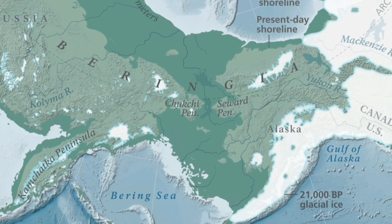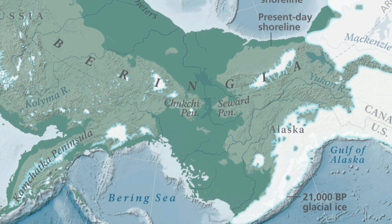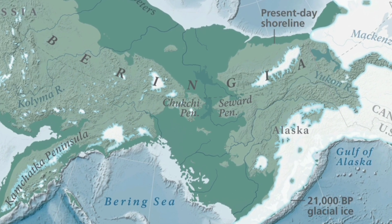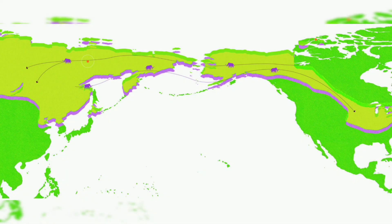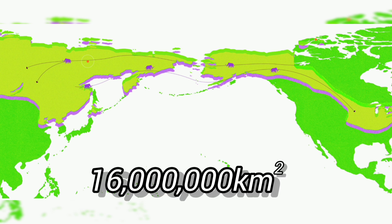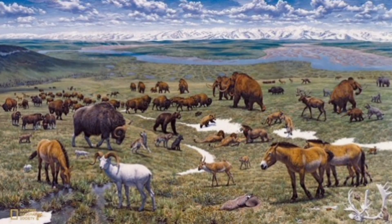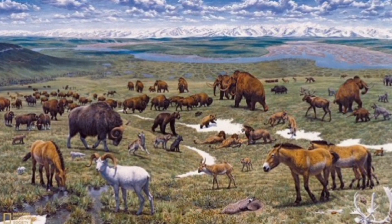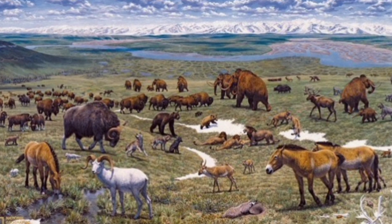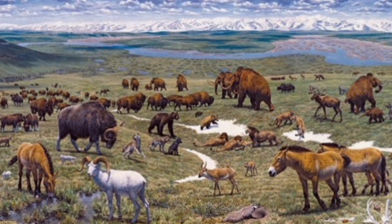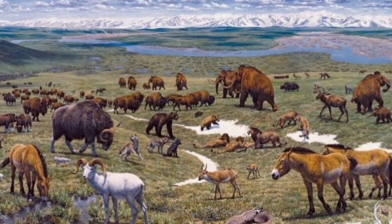The altered topography and shifting climatic zones reshaped ecosystems, promoting the development of the Mammoth Steppe. This was an extensive cold and dry grassland spanning from Western Europe through Siberia to North America, covering an estimated 16 million square kilometers — larger than any present-day ecosystem. It was dominated by hardy grasses, sedges, and herbs, which thrived in harsh glacial conditions and supported a diverse range of megafauna.